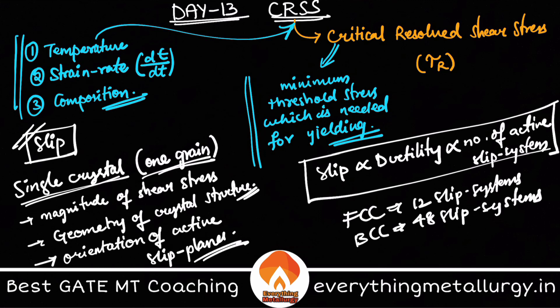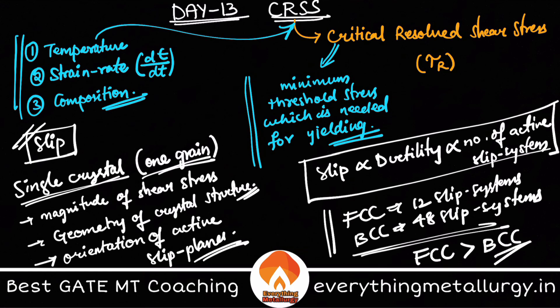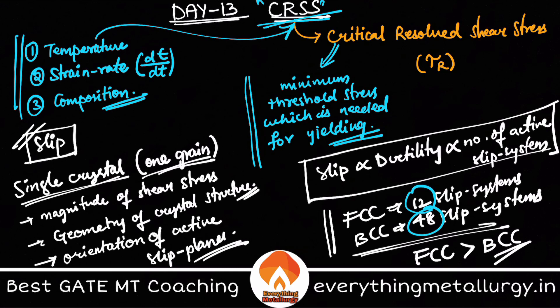If you look at the series of ductility, FCC will always be more ductile than BCC. Even though FCC has 12 slip systems and BCC has 48, slip does not directly take place on any slip system — it needs certain criteria. The active slip systems, meaning the planes and directions in which slip can easily take place, are limited by the CRSS of that particular slip system. So the number of active slip systems in BCC is less than in FCC, which is why FCC is considered more ductile.